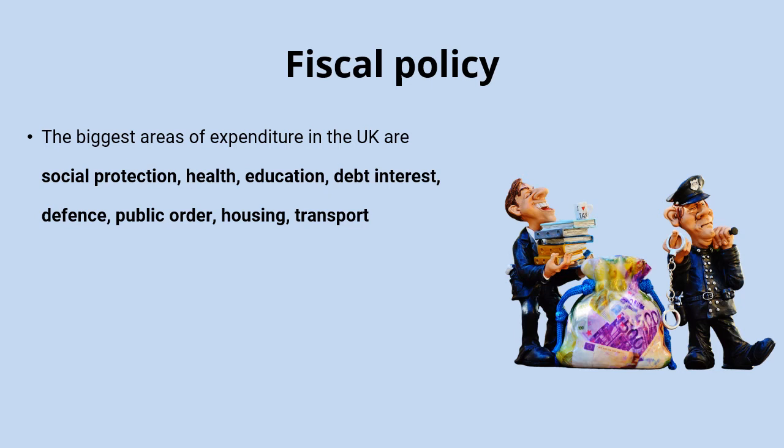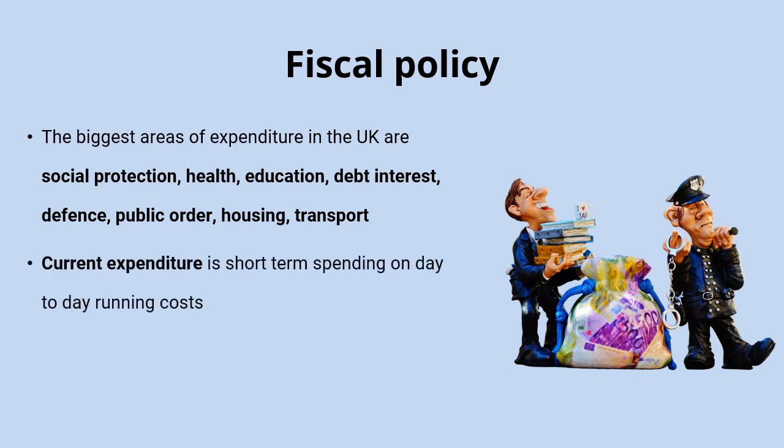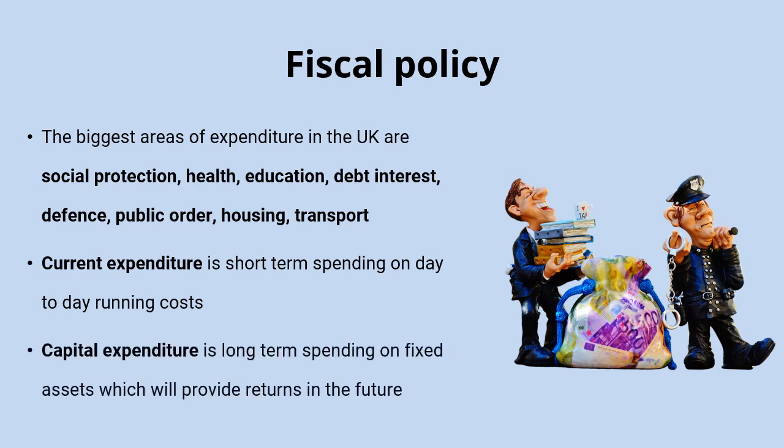We can also draw a distinction between two main categories of government expenditure: current and capital spending. Current expenditure is short-term spending on day-to-day running costs, such as teachers' wages or energy costs in hospitals. Capital expenditure is more long-term spending on fixed assets which will provide returns into the future, such as spending on new schools or hospitals.